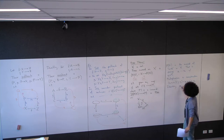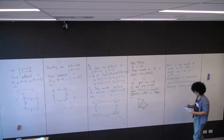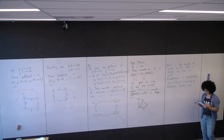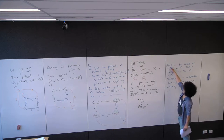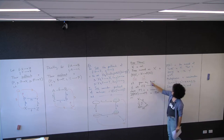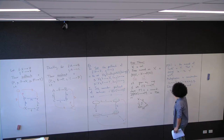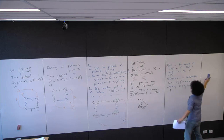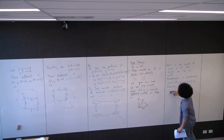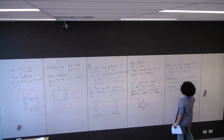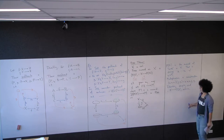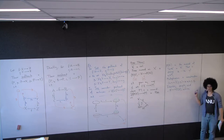The identity is the empty word. And the map ι from X to F(X) just sends an element to the string consisting of just that element.